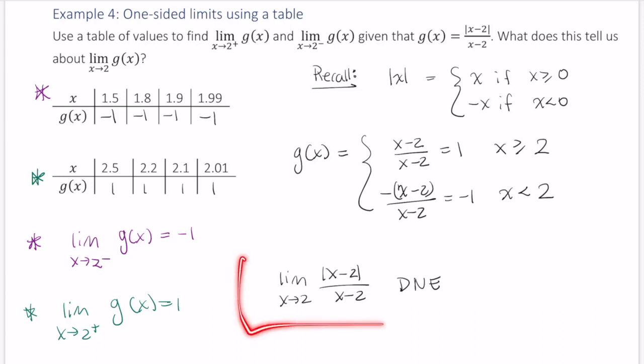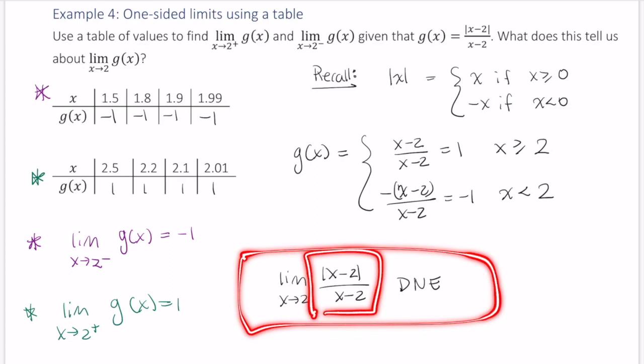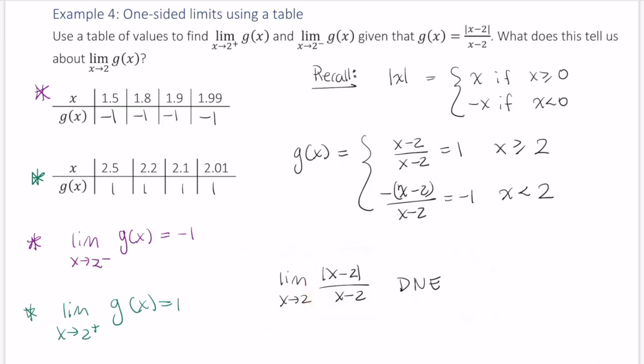So this limit here of g of x, which is the absolute value of x minus 2, in the numerator, and x minus 2 in the denominator does not exist. I will point out, oftentimes you will see people write equals does not exist. It's not quite accurate.